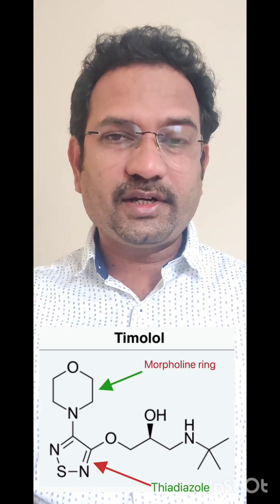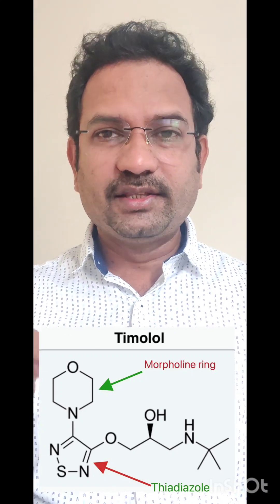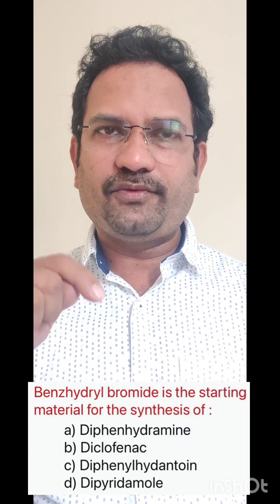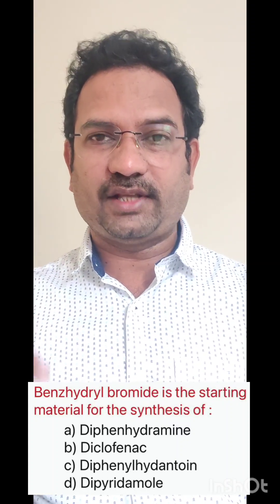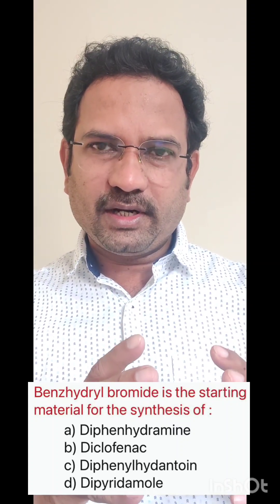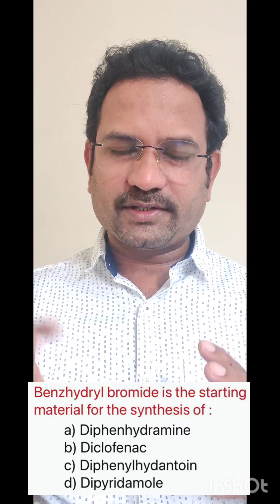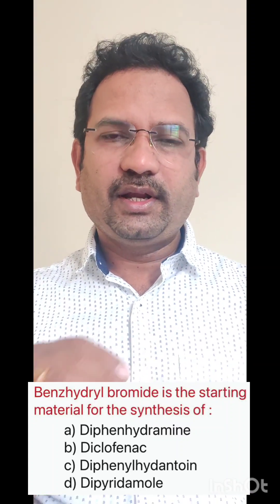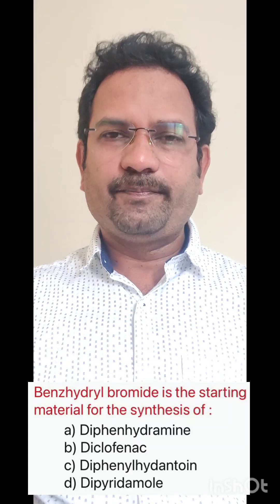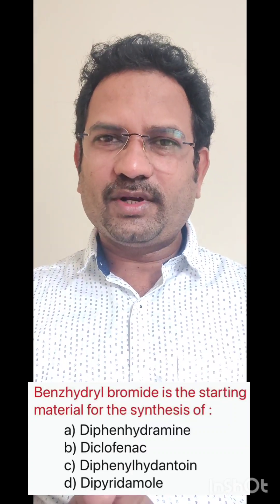Now look at the next question — this is related to synthesis. Benzhydryl bromide is the starting material for the synthesis of what? Options given are diphenhydramine, diclofenac, diphenylhydantoin, dipyridamole. Again this is a structure-related question — we need to know the structures of these drugs.